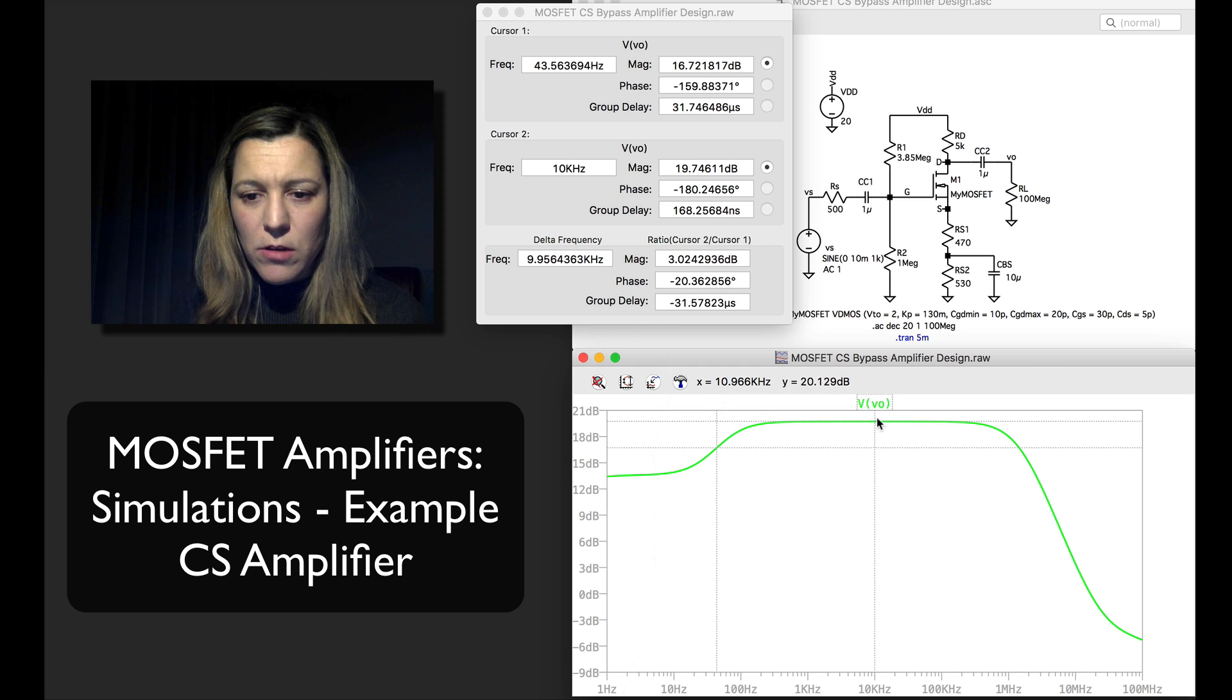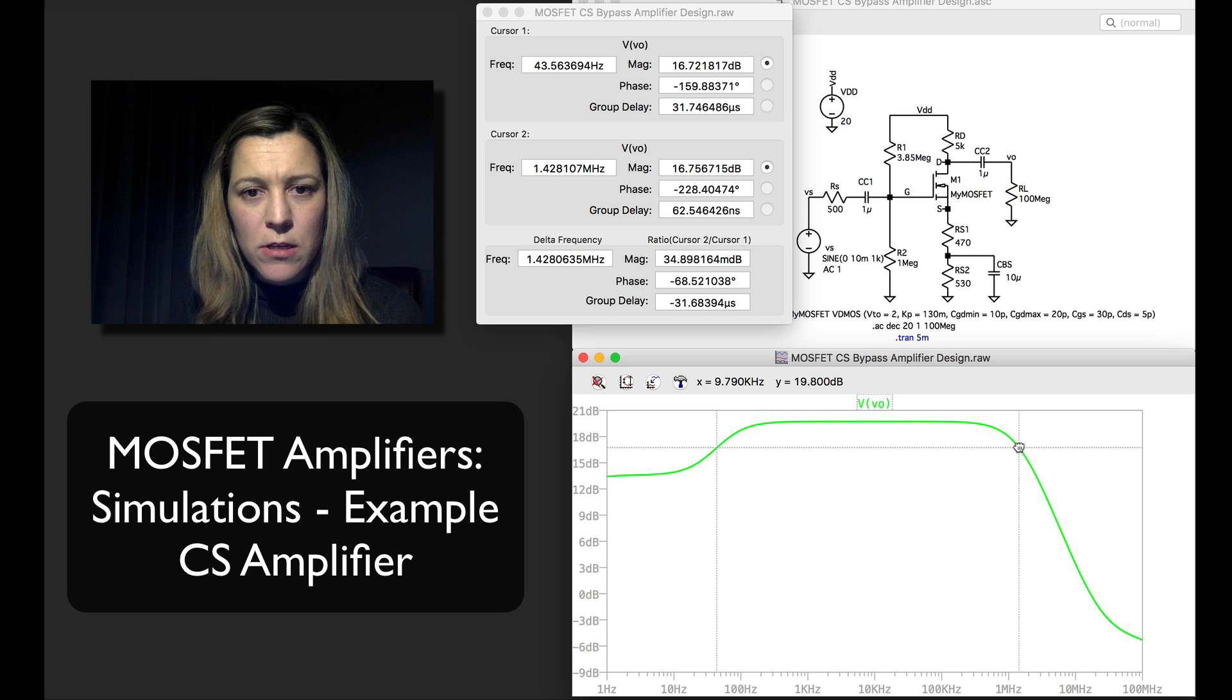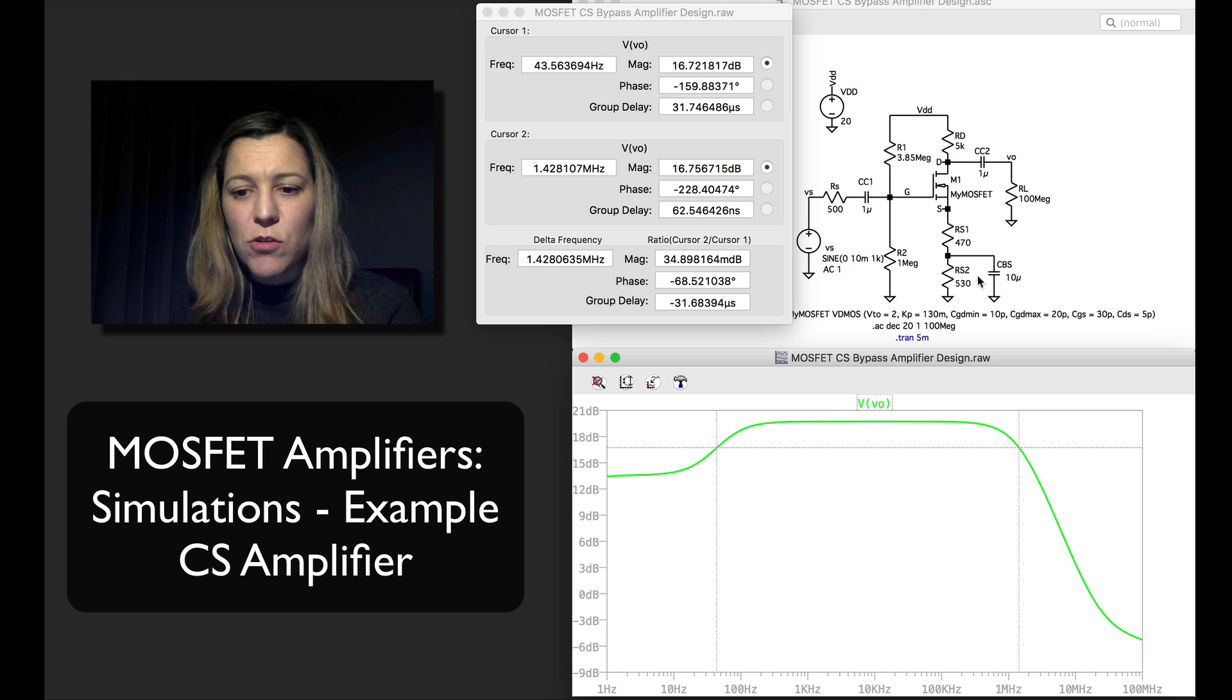So I'm going to attach the other cursor and move it to the same point on the high end. 16.7 dB, and I get a high cutoff frequency of 1.4 MHz. And so these results are fairly close to what I calculated.